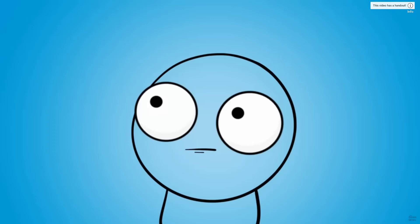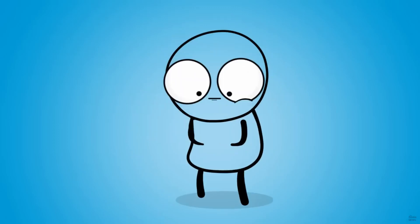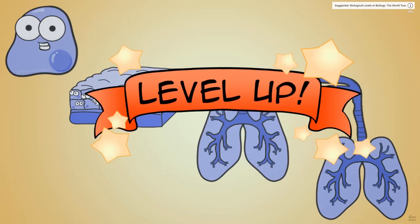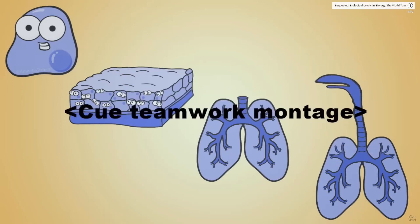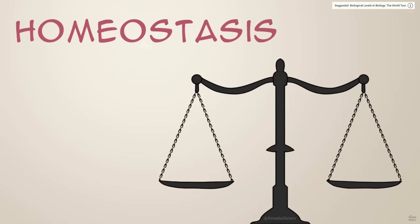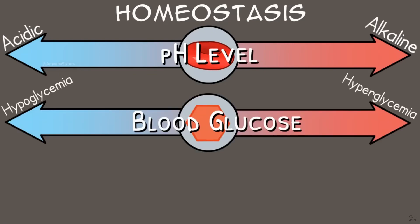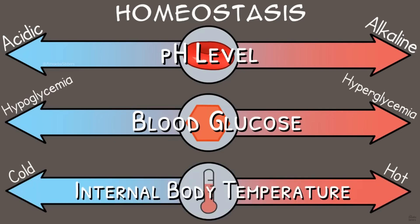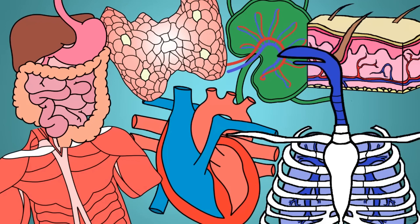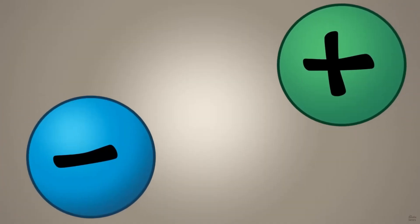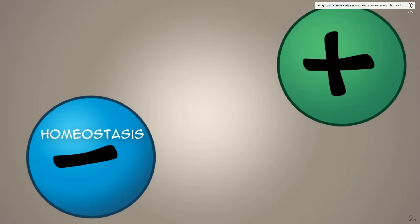Did you know that just sitting here right now, you're doing something absolutely remarkable? Your cells, tissues, organs, and organ systems are all working towards something called homeostasis — a state of balance. Homeostasis means many things in your body: your blood stays within a certain pH level range, your blood glucose remains within a certain range, and your internal body temperature stays within a certain range. Today we're going to talk about how body systems work together using positive and negative feedback and how this relates to homeostasis.